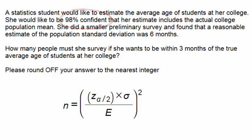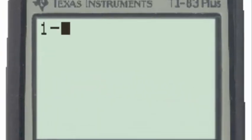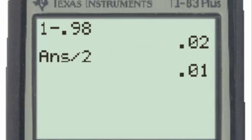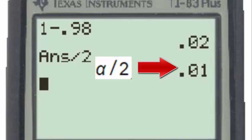And here we see that that's equal to 2%. Dividing this by 2, we have alpha divided by 2, which is 1%. However, this is not z subscript alpha divided by 2. This is simply alpha divided by 2.